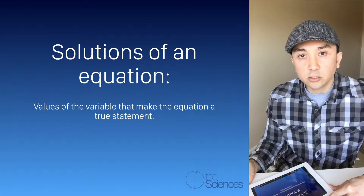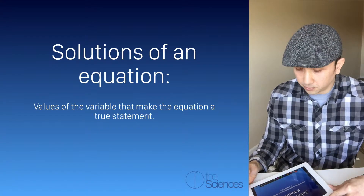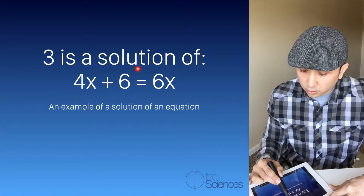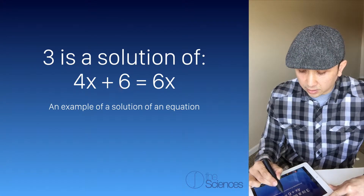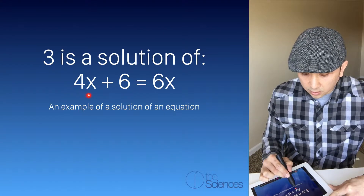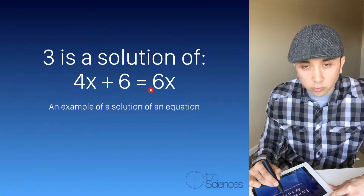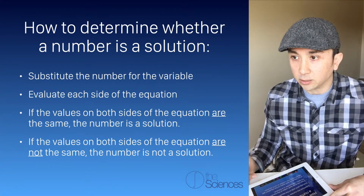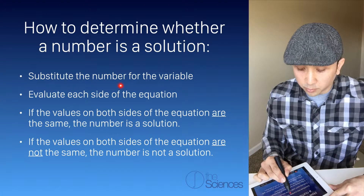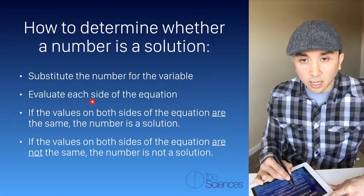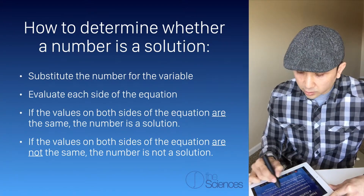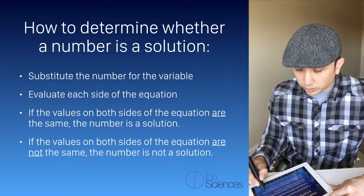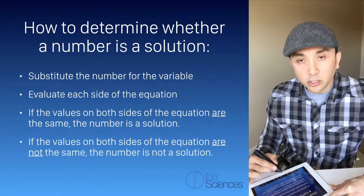Solutions of an equation are values of the variables that make the equation a true statement. For example, 3 is a solution of the equation 4x plus 6 equals 6x, because if we substitute x with 3, one algebraic expression will equal the other. To determine whether a number is a solution, substitute the number for the variable, evaluate each side of the equation, and check if both sides are equal. If they are equal, the number is a solution; if not, it is not a solution.